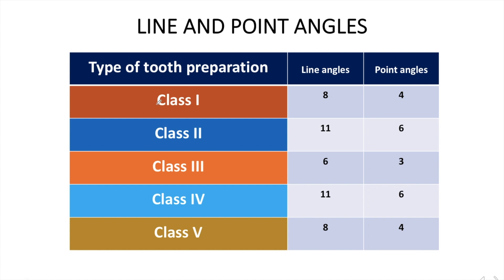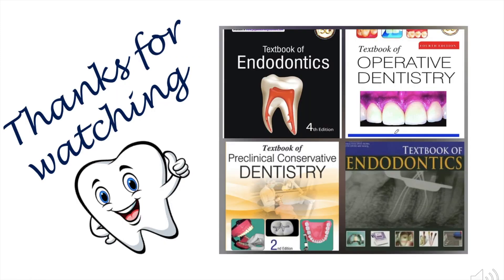This is a summary of line and point angles of class 1, 2, 3, 4, and 5 tooth preparations. Class 1 and 5 have similar numbers of line and point angles, and class 2 and 4 have similar numbers. In the upcoming video, I will be explaining the stages of tooth preparation in detail. This content is from the 8th chapter of the 4th edition textbook of operative dentistry, the link of which is in the description. Thanks for watching — kindly like, subscribe, and share.